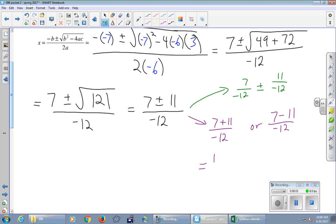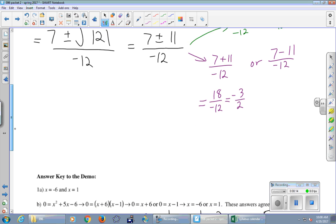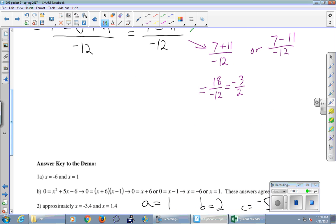And now we'll do these separate calculations and make simplified fractions. 7 plus 11 on top, that's 18 over negative 12. We can reduce that. 6 goes into both, so I got negative 3 halves there. And then over here, 7 minus 11, that's negative 4 over negative 12. Negative over negative is positive. 4 goes into both, so we just get 1 third.